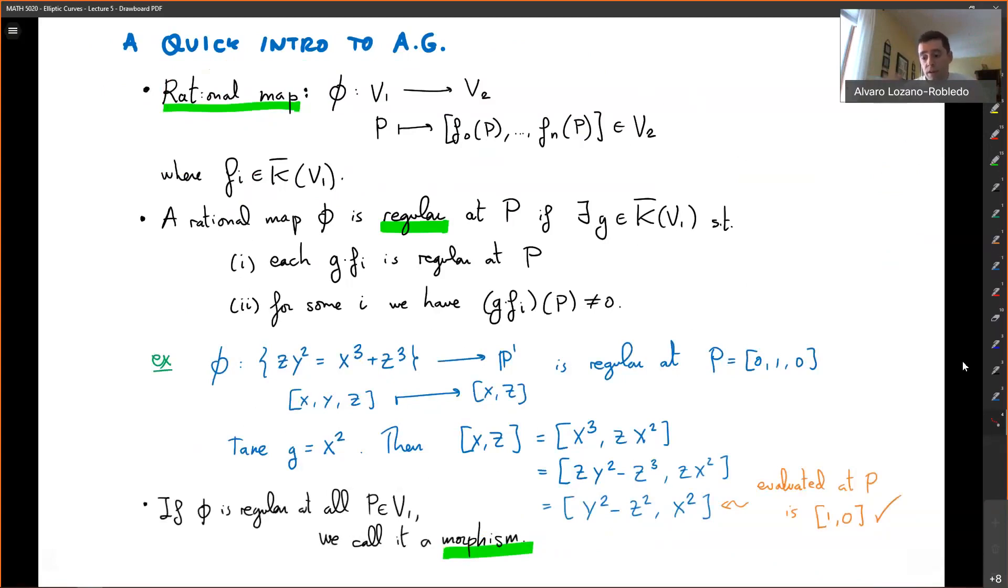We don't want to have, say, poles in some functions. And sometimes there are examples where the function is not defined at one point. So, for example, this function here, phi, is not defined straight away at the point (0, 1, 0), because when you evaluate (0, 1, 0), you get (0, 0), which is not in projective coordinates. That's not a projective point.